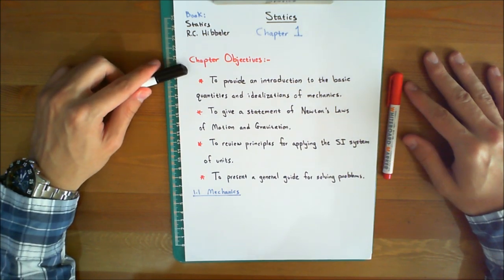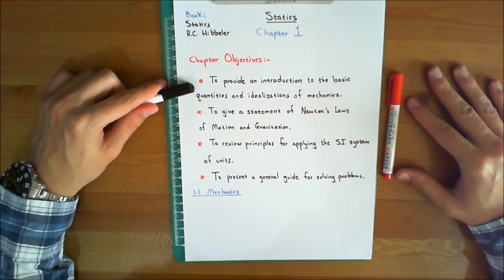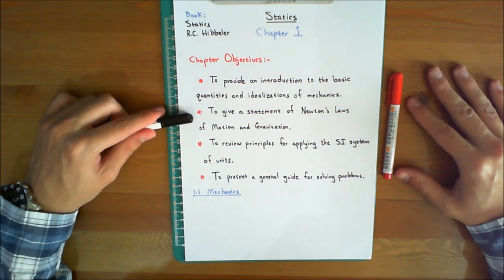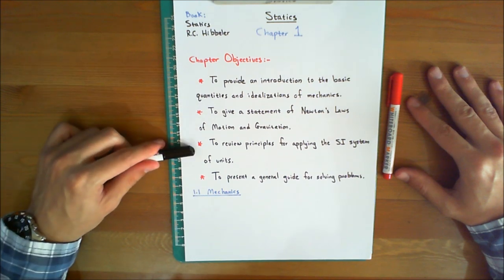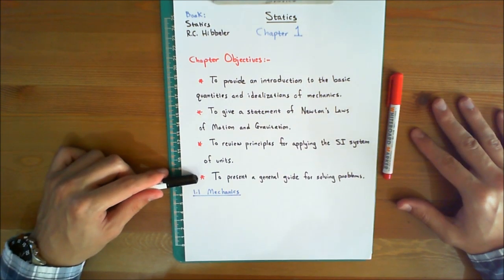Chapter objectives are as follows: to provide an introduction to the basic quantities and idealizations of mechanics, to give a statement of Newton's laws of motion and gravitation, to review principles for applying the SI system of units, and finally, to present a general guide for solving problems.